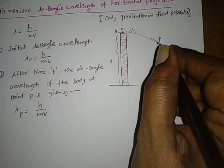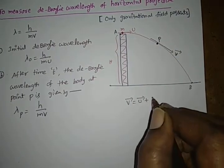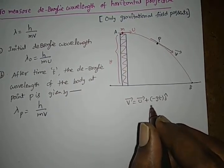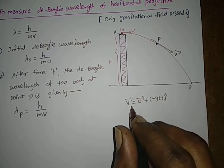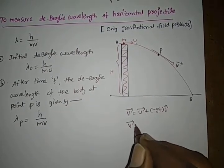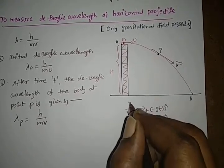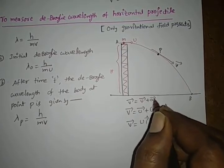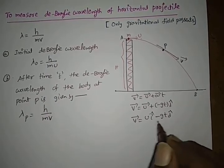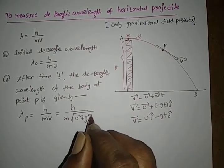We know that the velocity of the projectile after time t is v equals u i-cap minus g t j-cap, obtained from the equation of motion — velocity as a function of time. From this equation, the magnitude of velocity is given by square root of u squared plus g squared t squared.